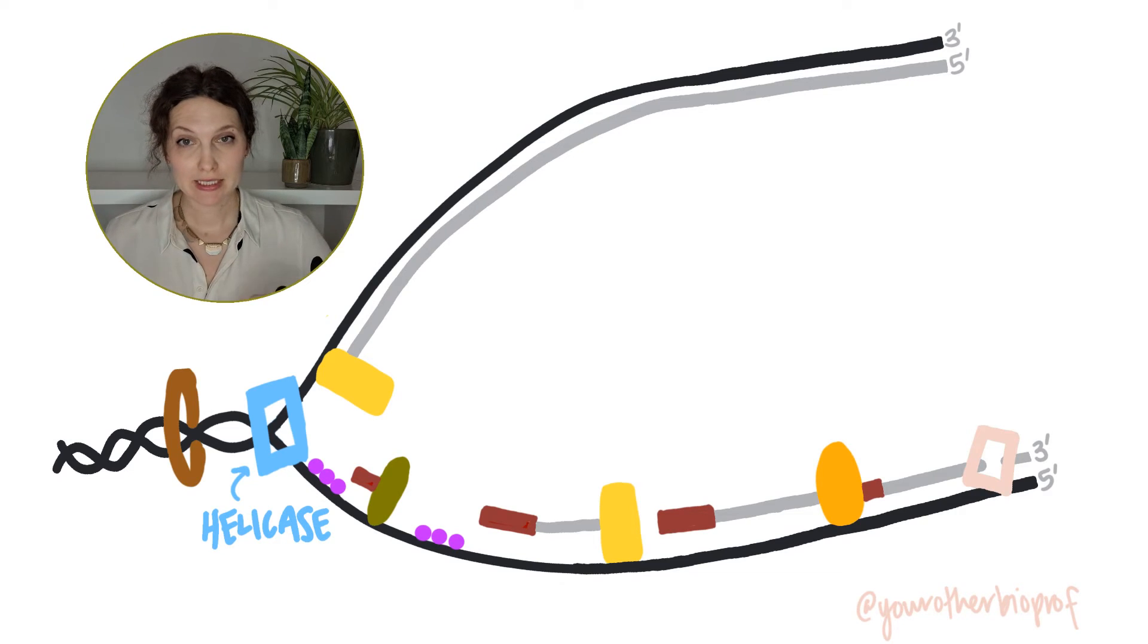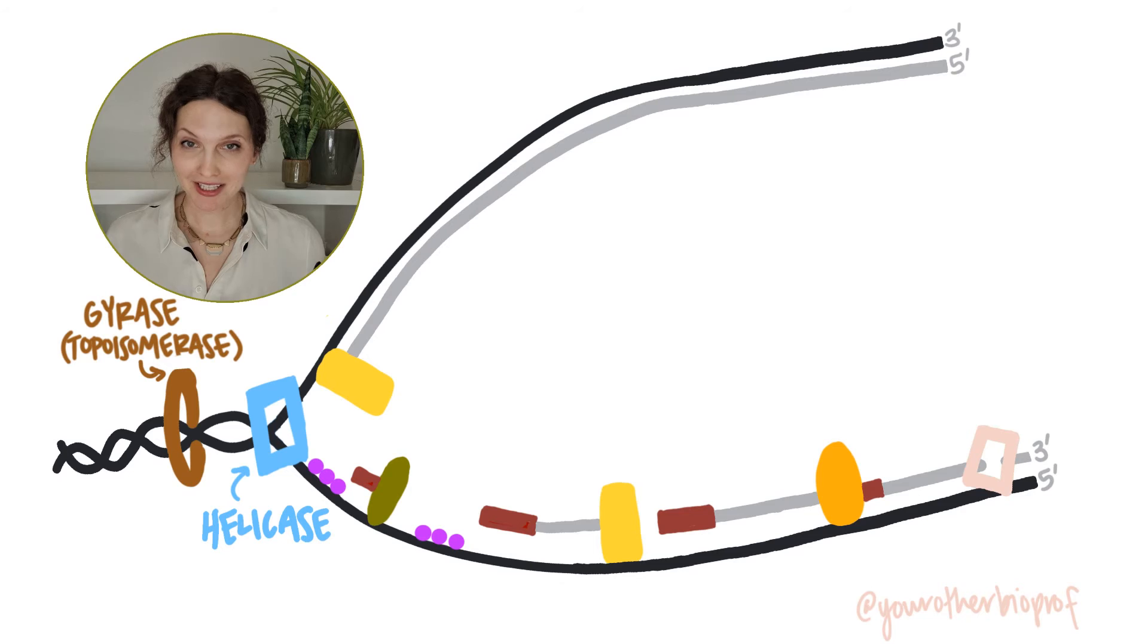Now as those strands separate, as they pull apart, it's gonna stress out the still wound-up DNA. There are enzymes to help with that too. They are called topoisomerases. Gyrase is a bacterial topoisomerase and you're gonna find that out in the still wound-up portion of the DNA to the front of your replication fork just outside.